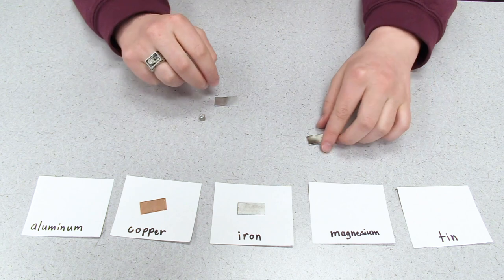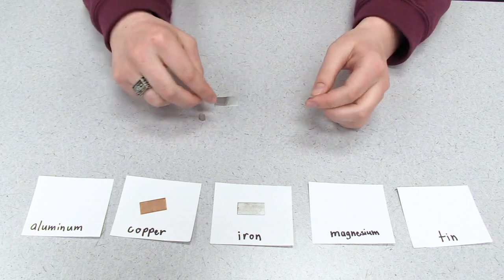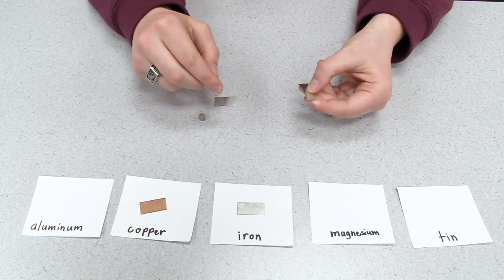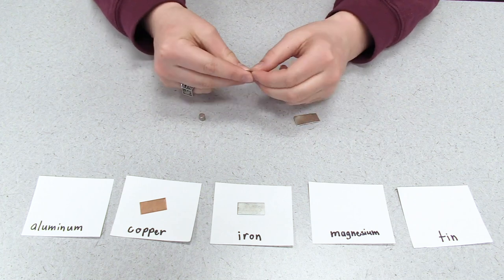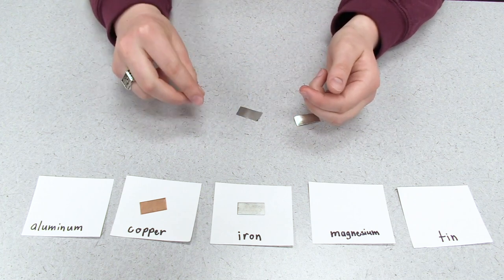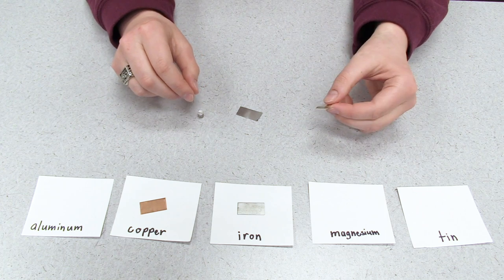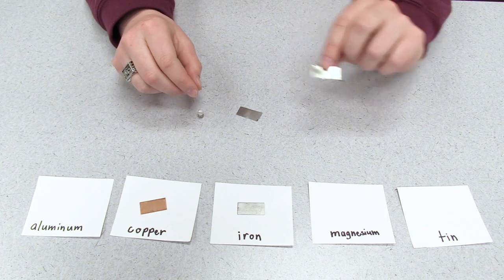Next, we're going to try to compare the density of these different metals. So this metal feels the heaviest and most dense, this one feels lighter, and this sample feels light as well. So we know that tin is the most dense metal, so this sample must be tin.